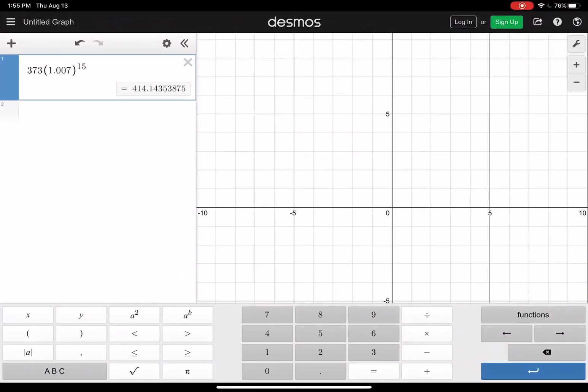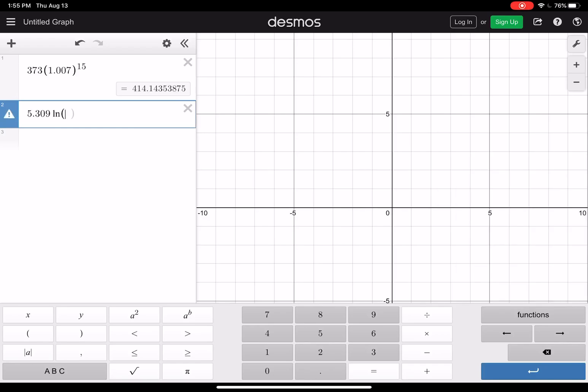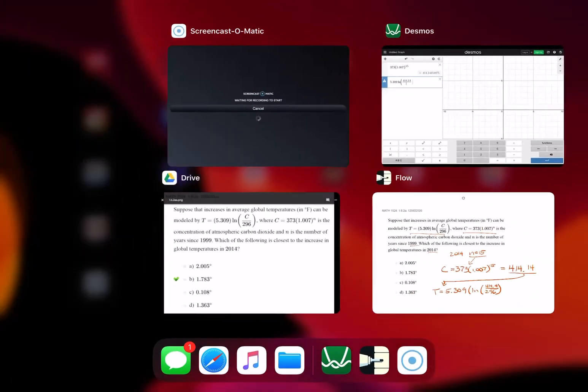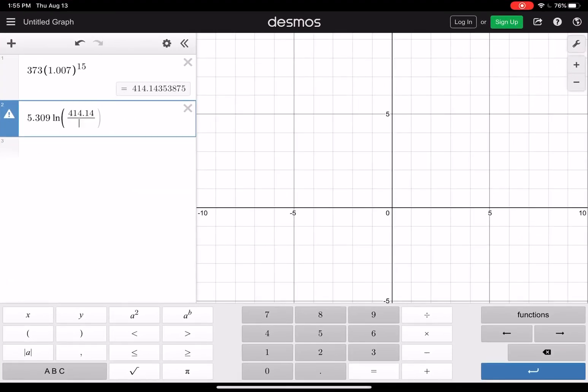We have 414.14 divided by, what was the denominator? We have 296. We hit equals, we get 1.783.